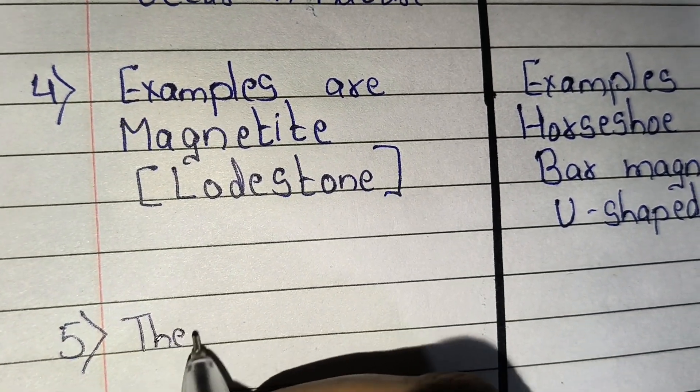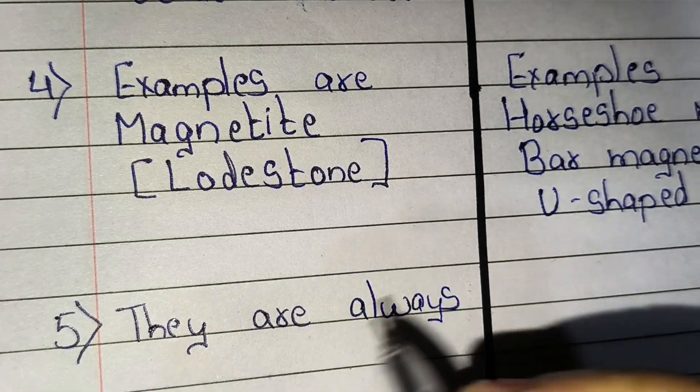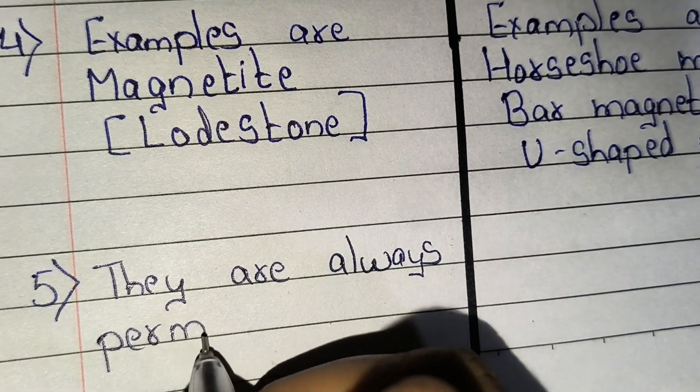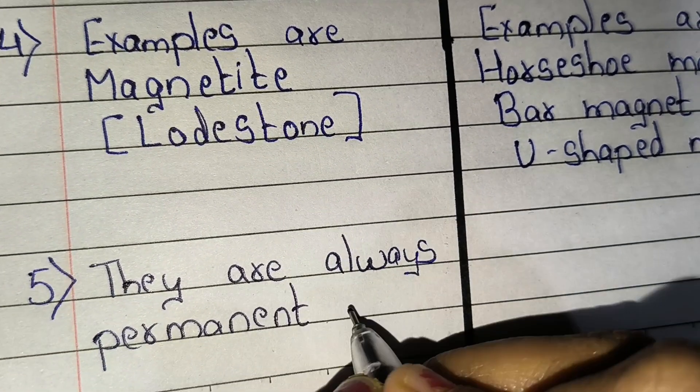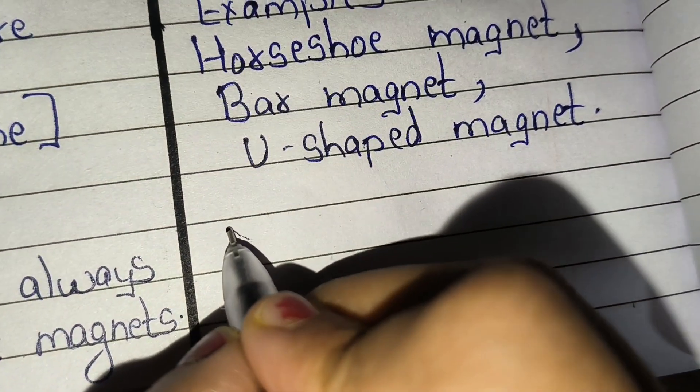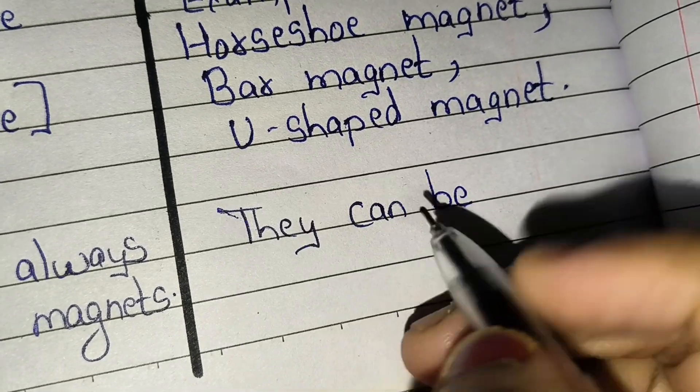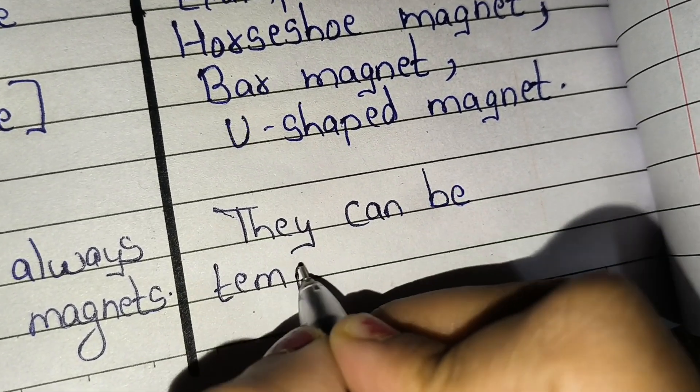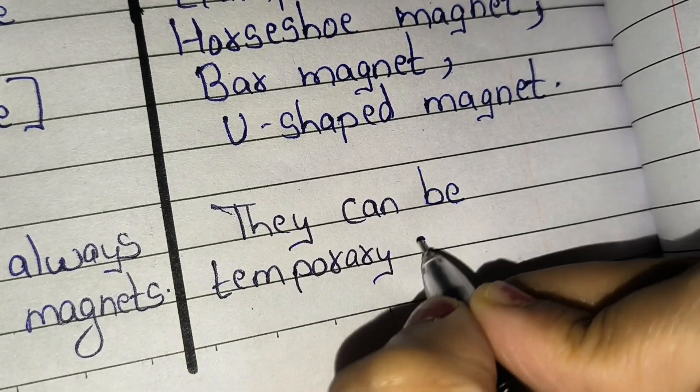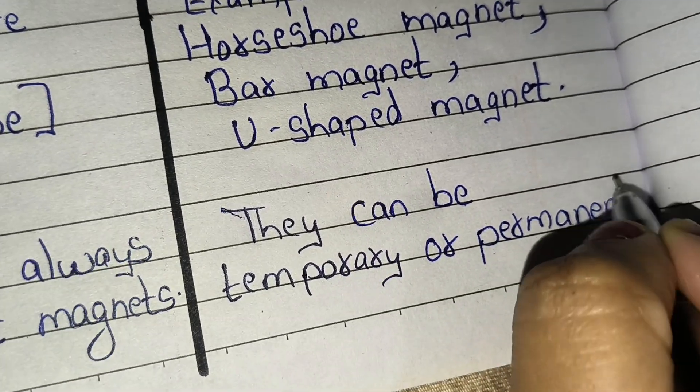Fifth point: in natural magnets, they are always permanent magnets. But in artificial magnets, they can be temporary or permanent magnets.